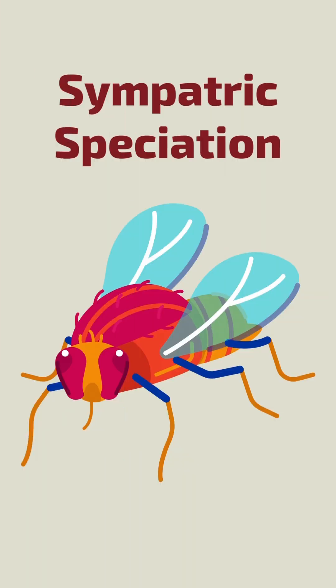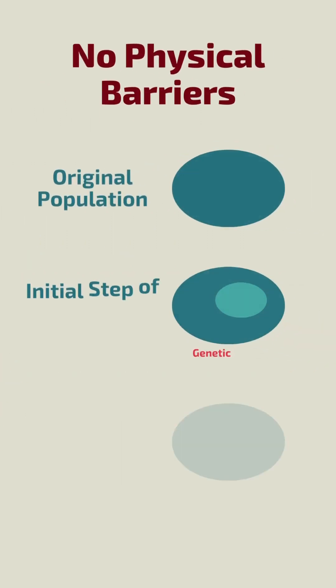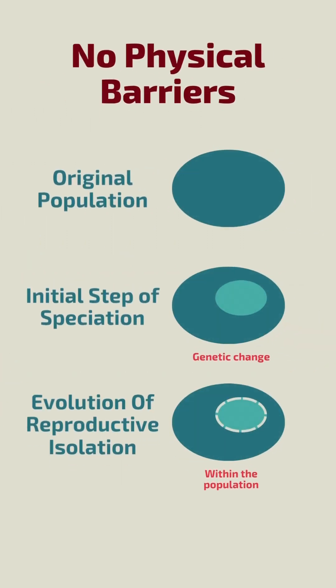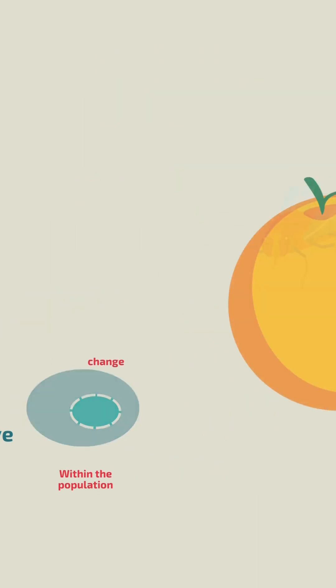Sympatric speciation occurs when a new species forms within the range of the original species, which can happen if a group of the original species evolves a genetic change that makes it reproductively isolated from the rest of the population.